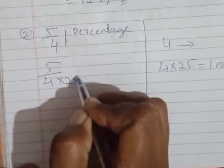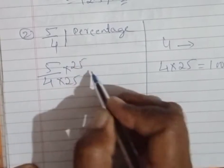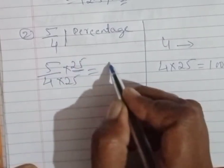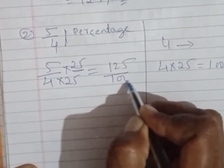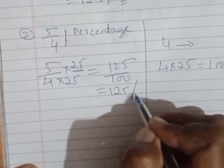4, what I'm doing here is multiplying this one by 25 and 25. So what happens here, you know 25 times 5 is 125, and it is over 100, then you're going to write directly 125 percent.